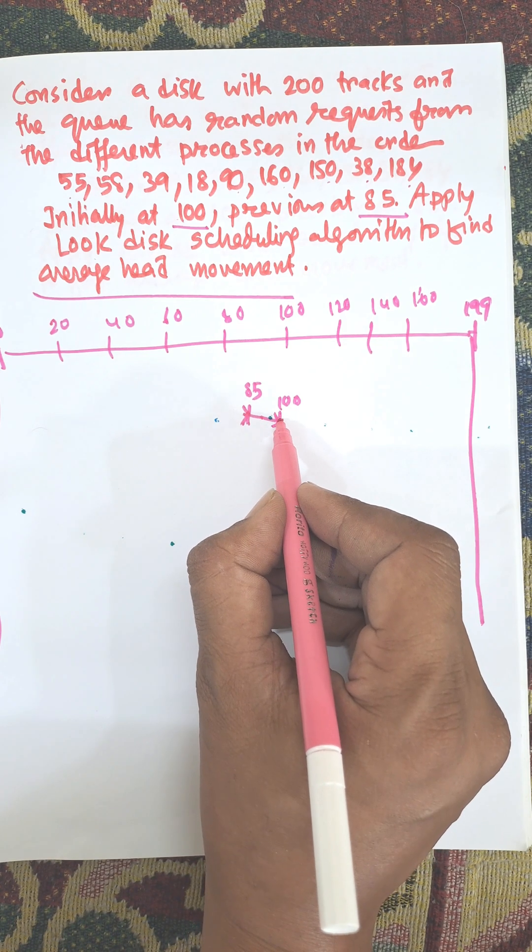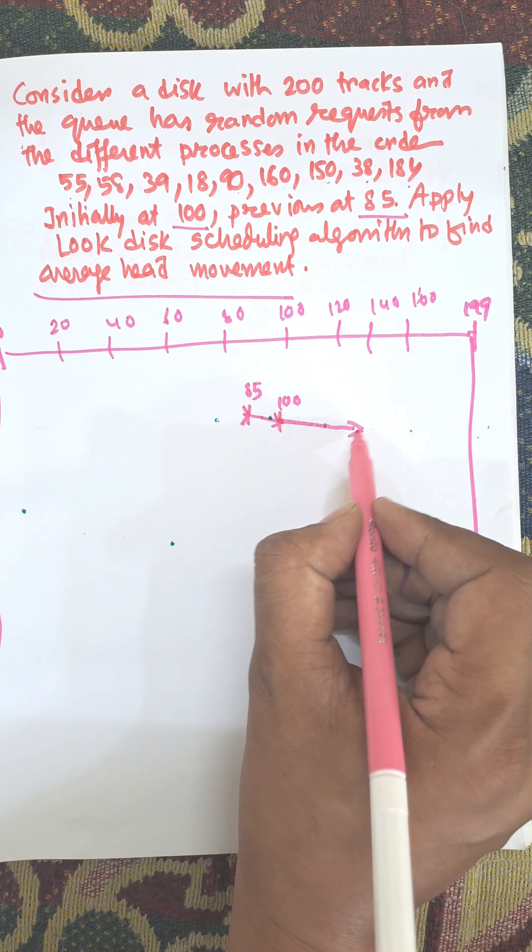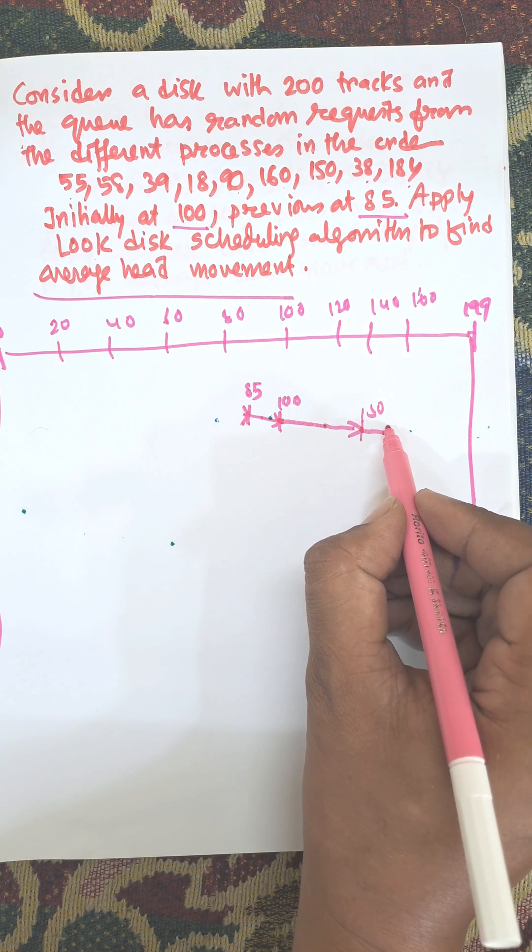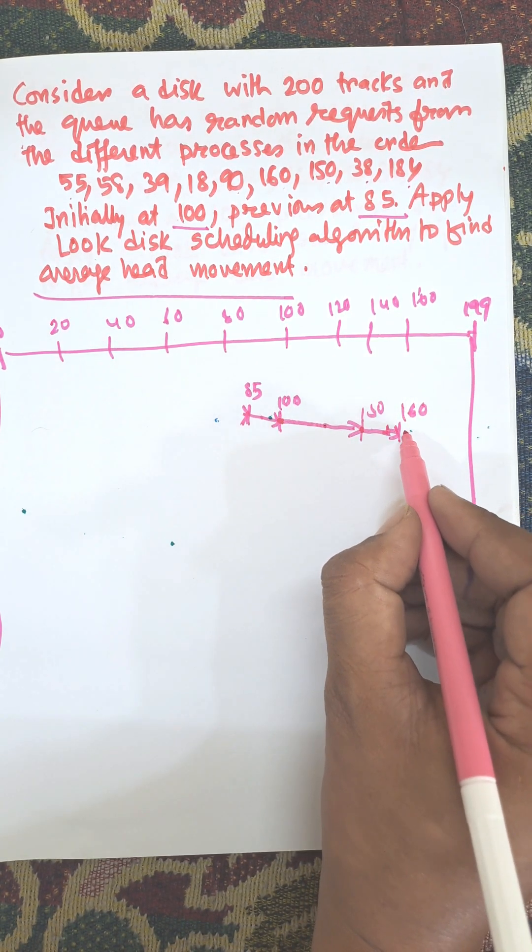From 100, we need to choose next one is 150, suppose this one is 150, next one is 160, this one is 160, then 184.